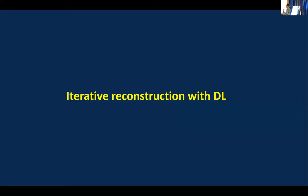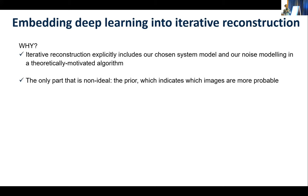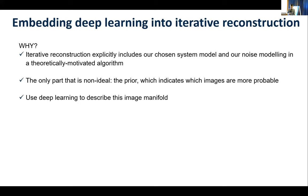Now we're going to talk about how we get deep learning embedded into our image reconstruction frameworks. Why do it? Well, iterative reconstruction, as we've seen already today, builds in our chosen imaging model, our physics, and also the Poisson noise model. So these are two very desirable things we like about OSEM or MLEM. It's a theoretically well-motivated algorithm for maximizing Poisson log likelihood or the log posterior. But the only part that is not ideal is the prior, which indicates which images are more or less probable.